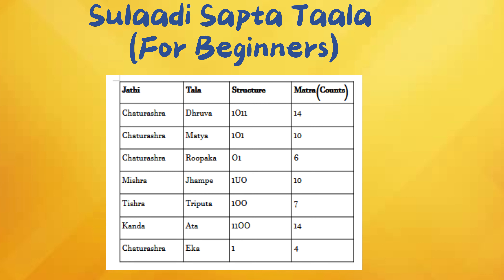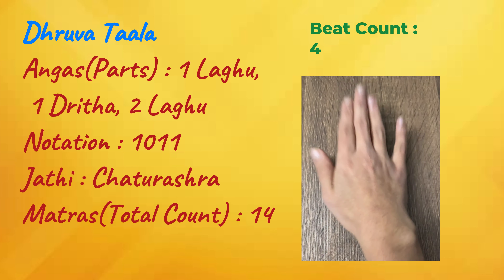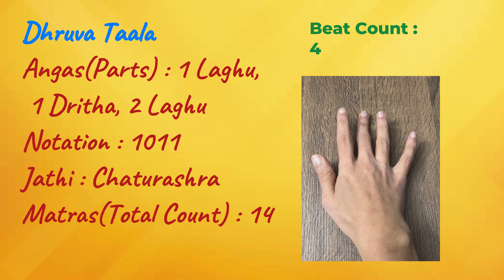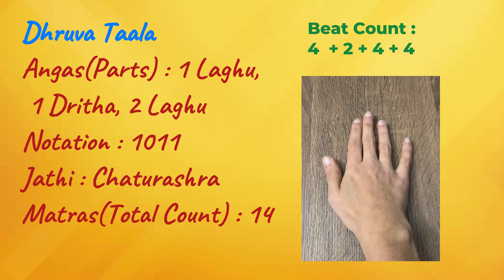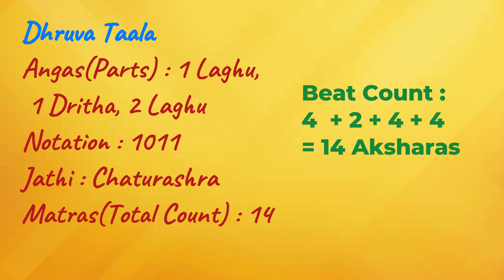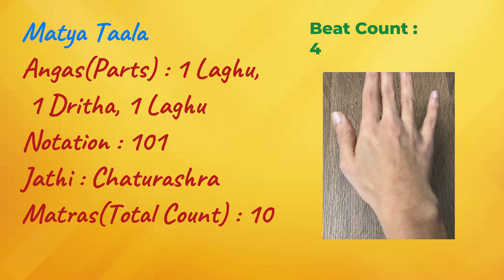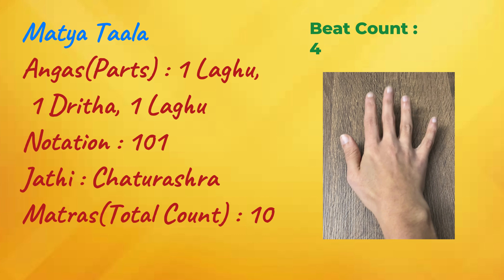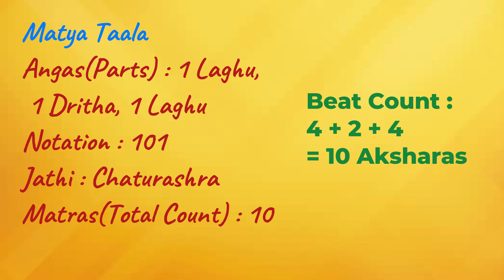Now, let's learn all the seven Talaas. The first Tala is known as Dhruva Tala. The Angas of Dhruva Tala are one Laghu, one Drita and two Laghus. When you put Dhruva Tala in Chaturashra Jati, it totals 14 Aksharas. The second Tala is called Mathya Tala. The Angas of Mathya Tala are one Laghu, one Drita and one Laghu. When you put Mathya Tala in Chaturashra Jati, it has a total of 10 Aksharas.